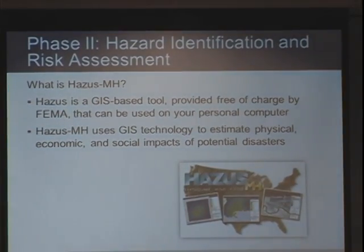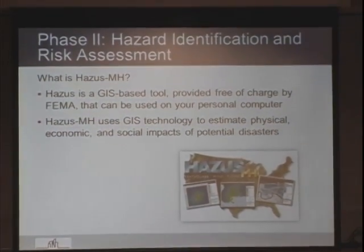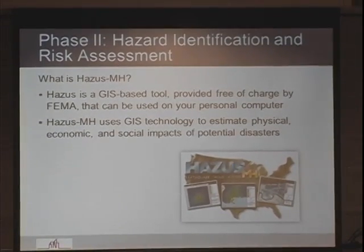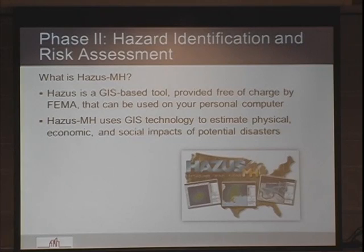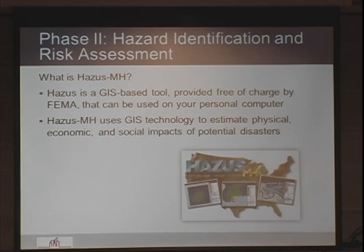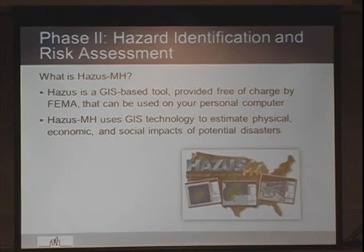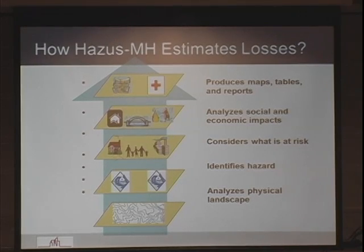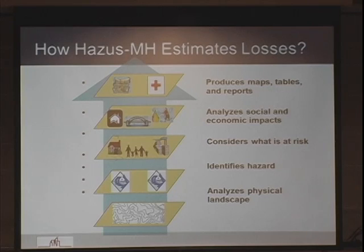Phase two is the risk assessment. We'll talk about Hazus MH — it's a GIS-based tool. You can go on FEMA's website, download it for free, and run hazards from your computer. It uses GIS technology and estimates physical losses, economic, and social impacts of potential disasters. It analyzes the physical landscape, assessing hurricanes, earthquakes, and floods — those are its current capabilities.